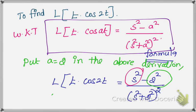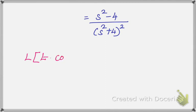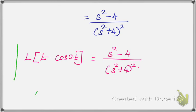So 2² here, 4 here, square. So your answer: s² minus 4 over (s² + 4)². Here 2² so 4, the whole square. Therefore, your answer: L{t·cos 2t} equals (s² - 4)/(s² + 4)². That is your final answer, okay.